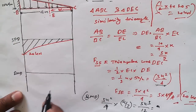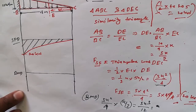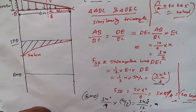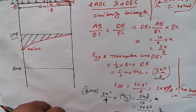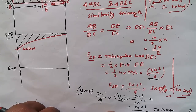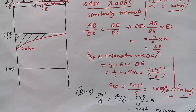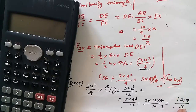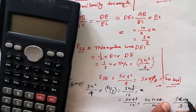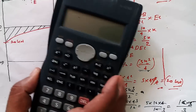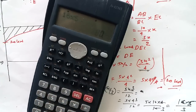Now I put the value of X as 4, because I need the bending moment for the whole beam. So it is 5 × 4³ / 12 = 5 × 16 × 4 / 12, which simplifies to 16 × 5 / 3. Let me show you the calculation: 16 × 5 = 80, divided by 3.